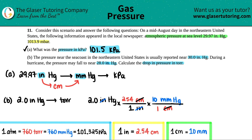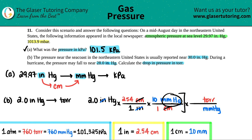Now one more conversion to get to Torr. Put millimeters of mercury on the bottom and Torr on top. For every 760 Torr there are 760 millimeters of mercury — it's a one-to-one conversion. So 1 Torr equals 1 millimeter of mercury. The millimeters of mercury cancel out and you're left with Torr.